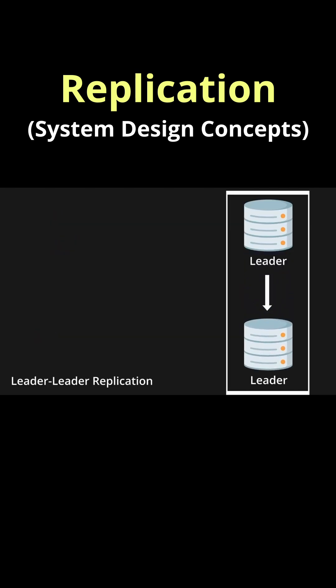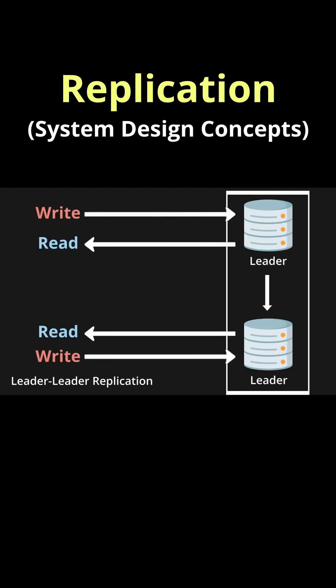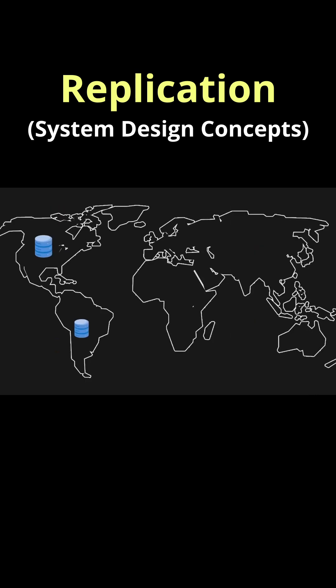There's also leader-leader replication, where every replica can be used to read or write. But this can result in inconsistent data, so it would be best to use it where you can have a replica for every region in the world, for example.